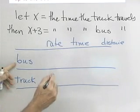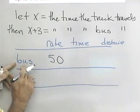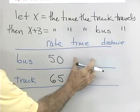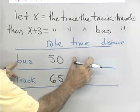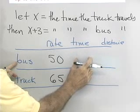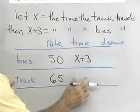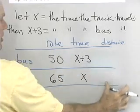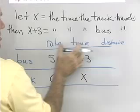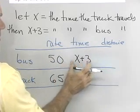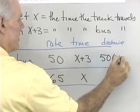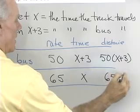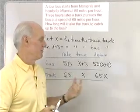The bus travels at an average speed of 50 miles per hour — that's the rate for the bus. The truck travels at 65 miles per hour. The amount of time the bus travels before the truck overtakes it is x plus 3, and the amount of time the truck takes to overtake the bus is x. Then I multiply rate times time to fill in the distance column for both the bus and the truck.